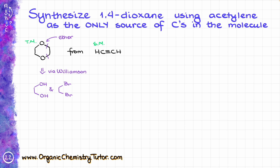That gives me the following two predecessors that I'm going to feed into my Williamson ether synthesis to make my target molecule. The question is, how am I going to make each of those molecules? The diol I can easily make from the corresponding alkyne via the dihydroxylation reaction, and my vicinal dihalide I'm also going to be able to make from the corresponding alkyne via a simple halogenation reaction. Both of my intermediates are going to be coming from the same molecule, making my synthesis significantly easier.